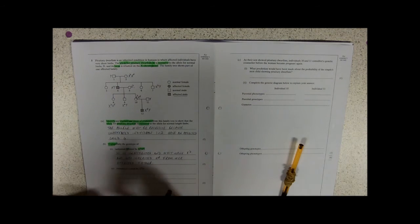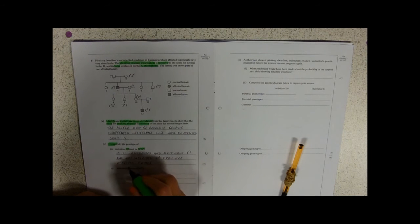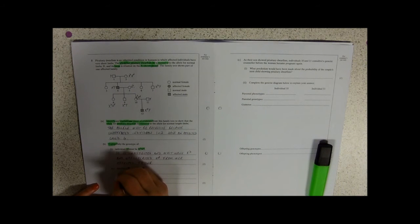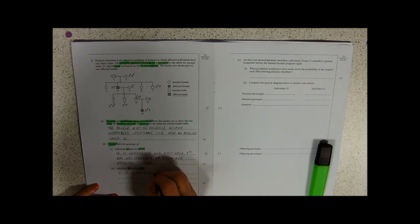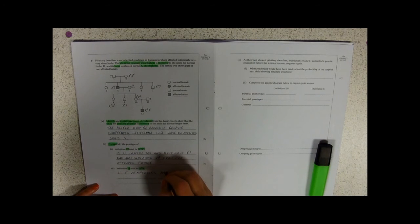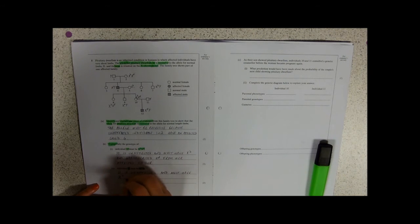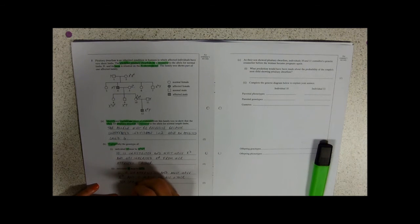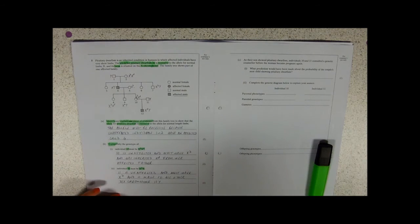So now I need to explain why individual 11 must be X D big D Y. Individual 11 is unaffected and must have X big D, and he's male. So his other sex chromosome is Y. Very good.